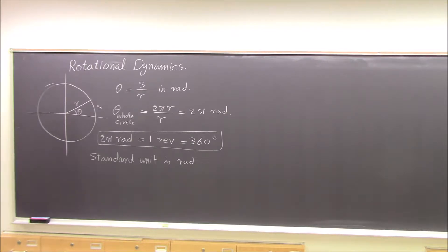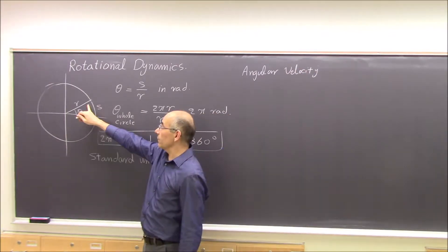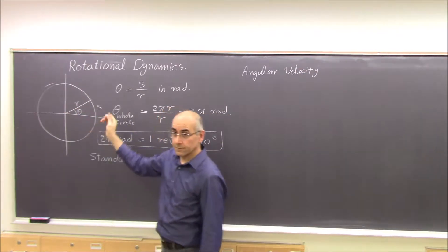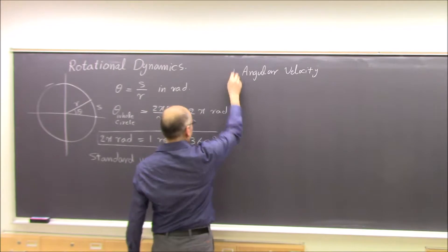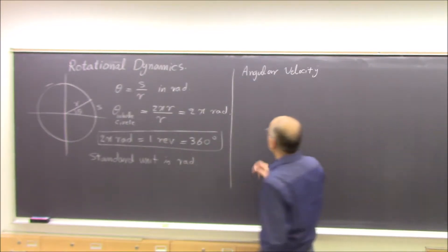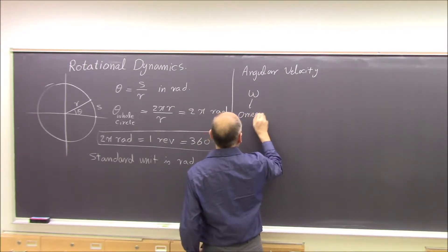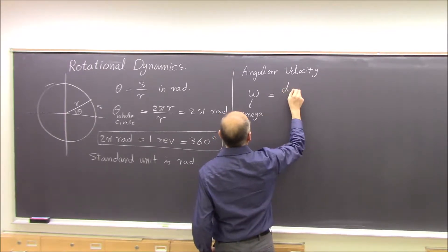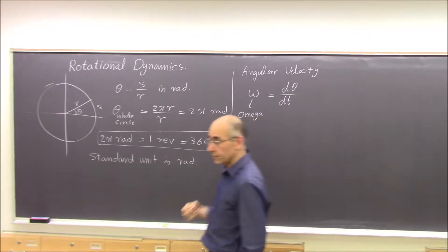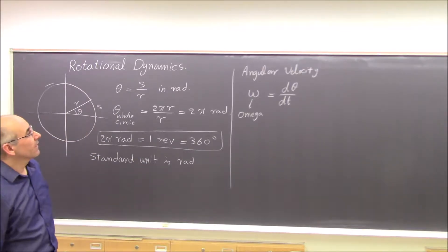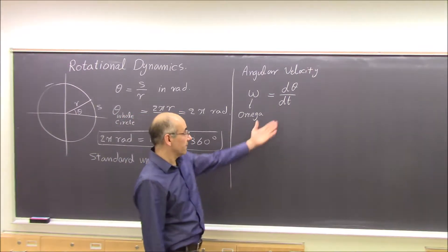Next, we define angular velocity. Theta is called angular position — it shows the position on the circle in radians from a fixed reference point. Then we define angular velocity, called omega. Omega is defined as dθ/dt, meaning the derivative of theta — how fast theta is changing, or the rate of change of theta.